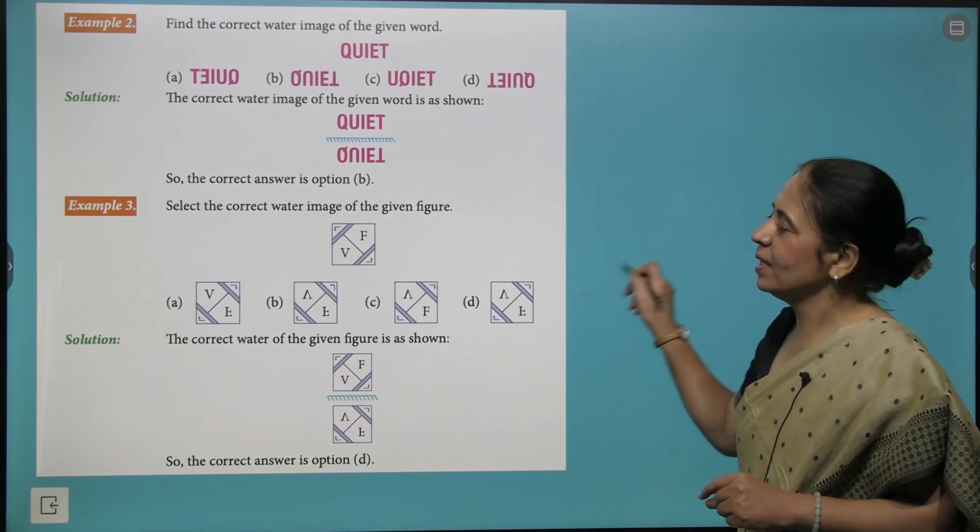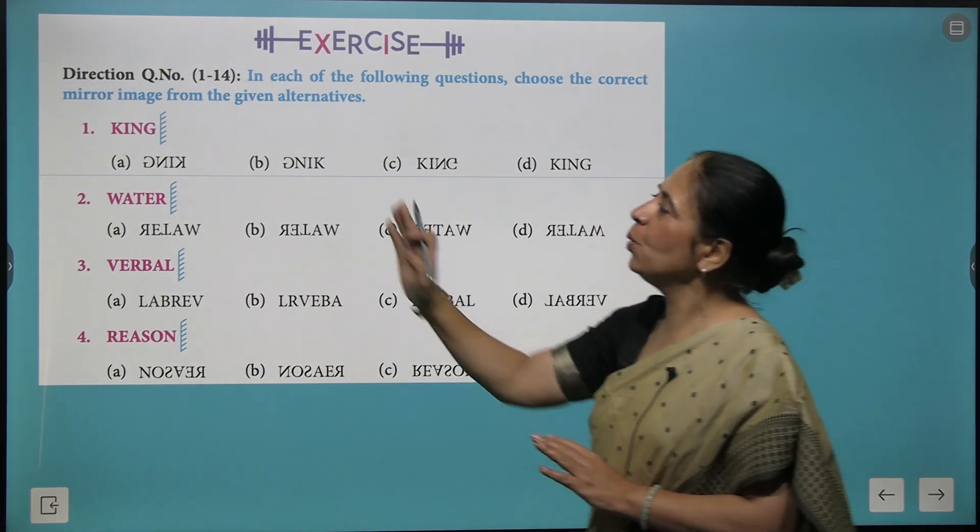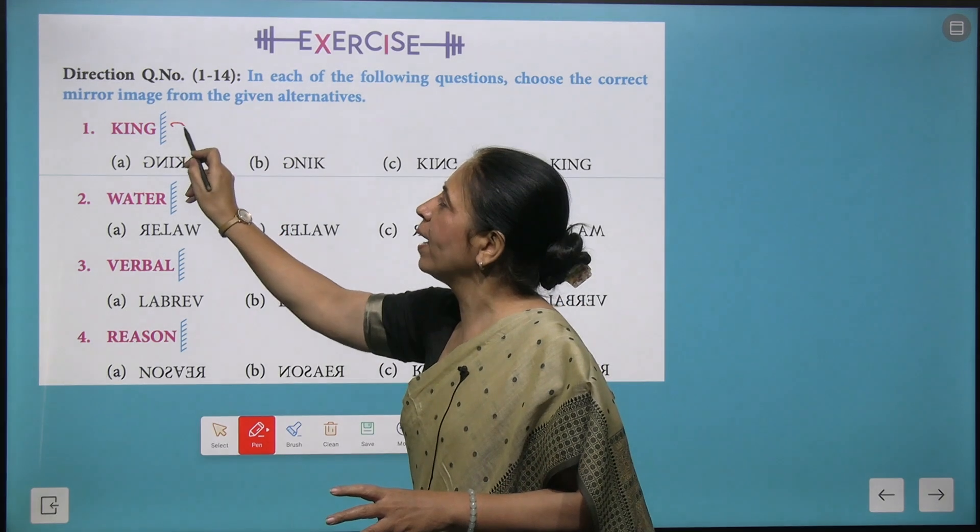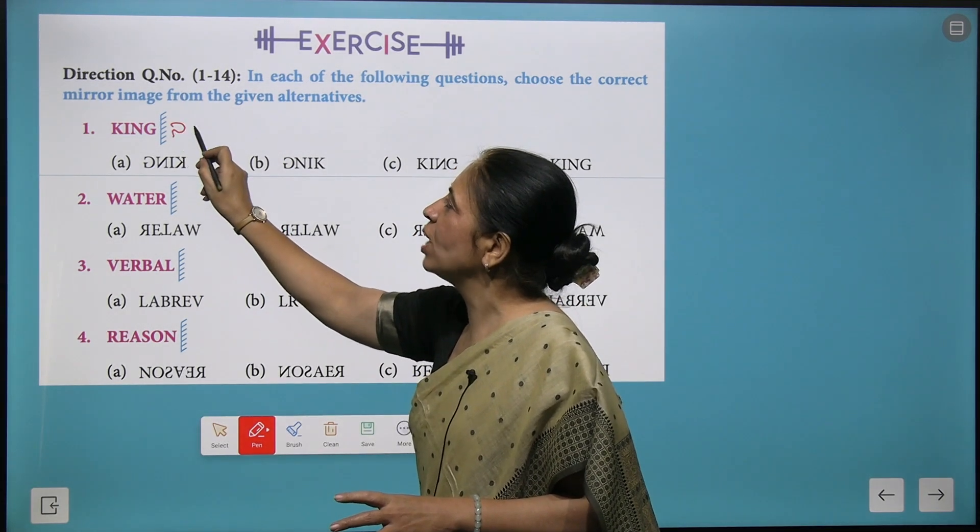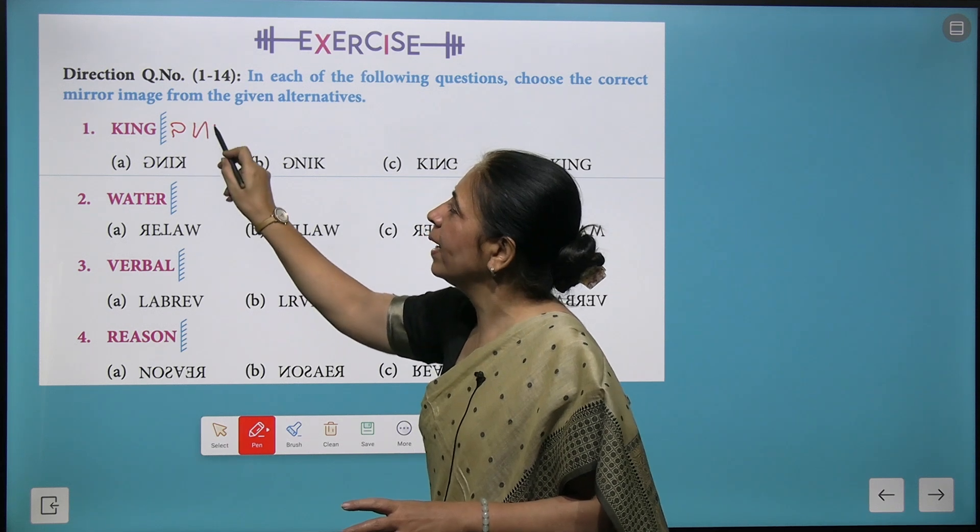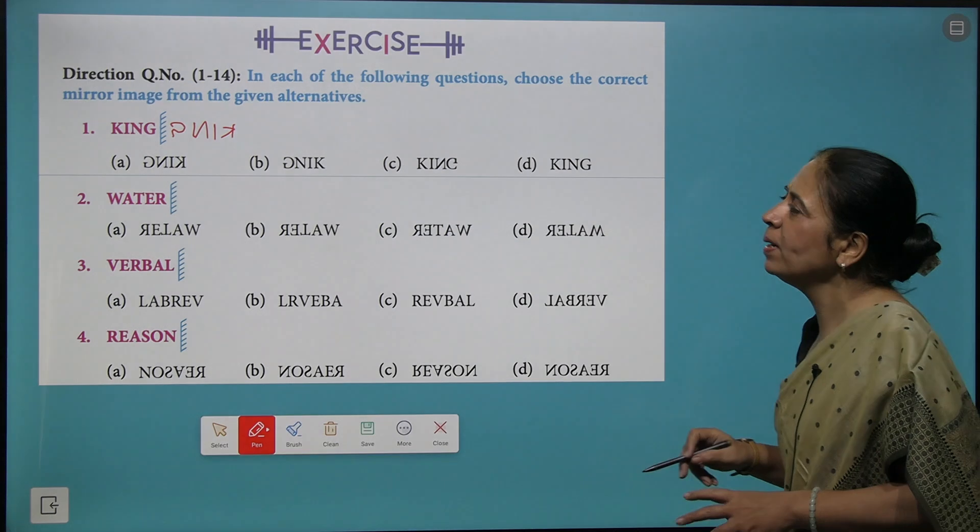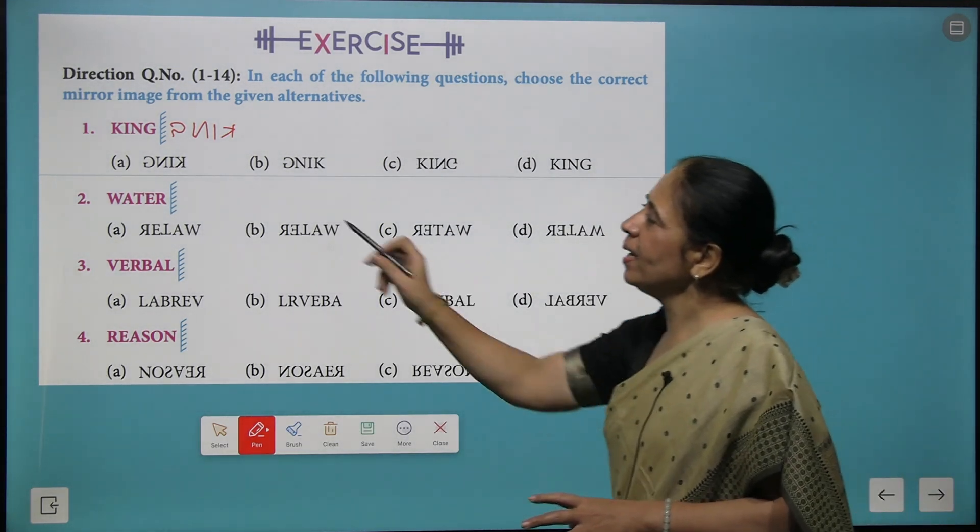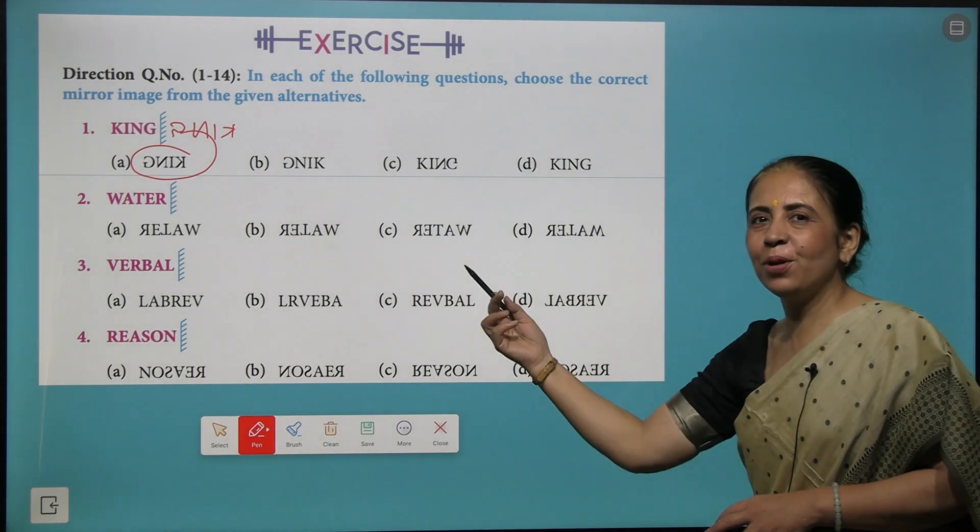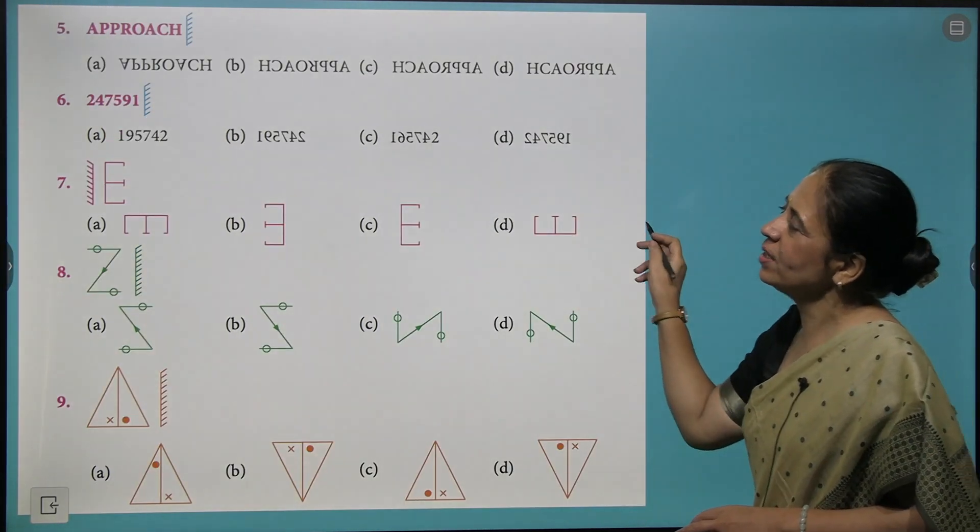So this is how you could solve the questions. Now I brought various questions for you. When you have to form the mirror image, just try making the image like this. So then you write N, it comes like this. Then I comes like this. And this is how K is formed. And you immediately come with the answer A.